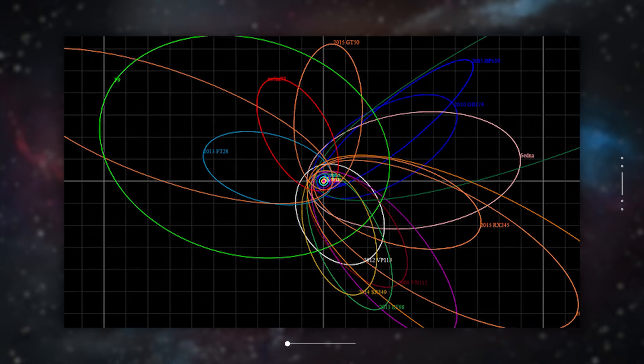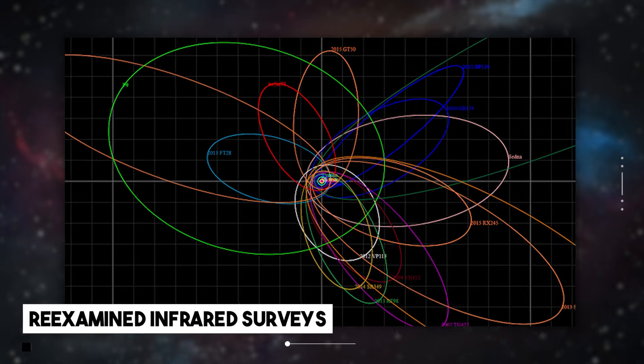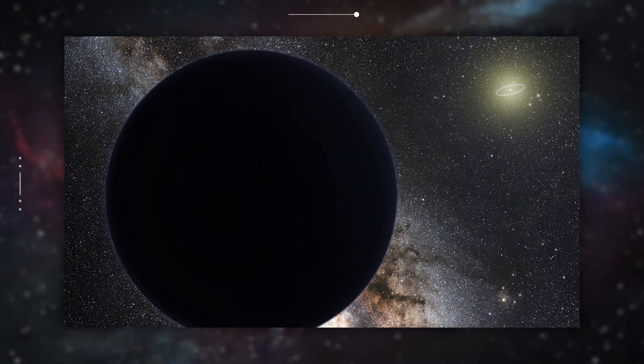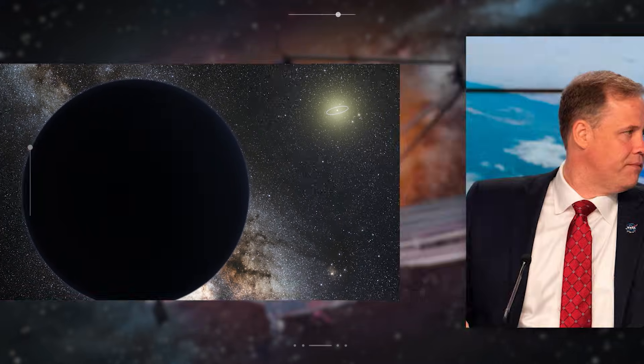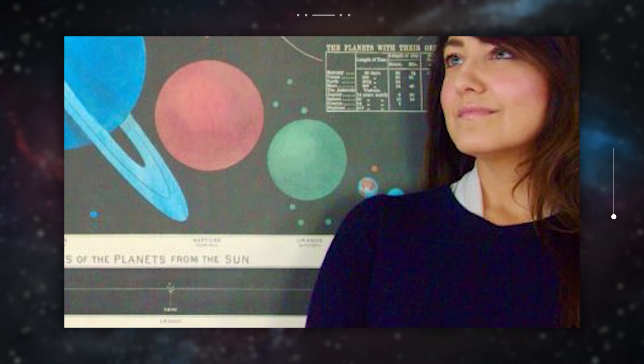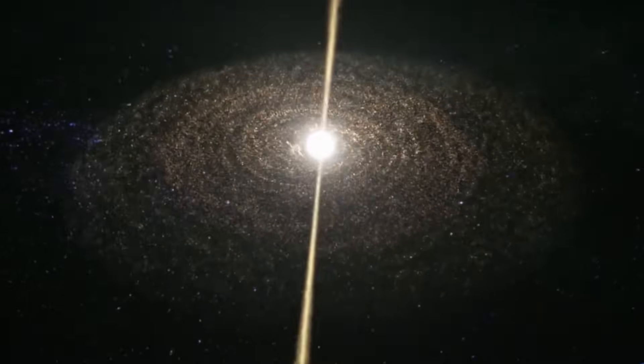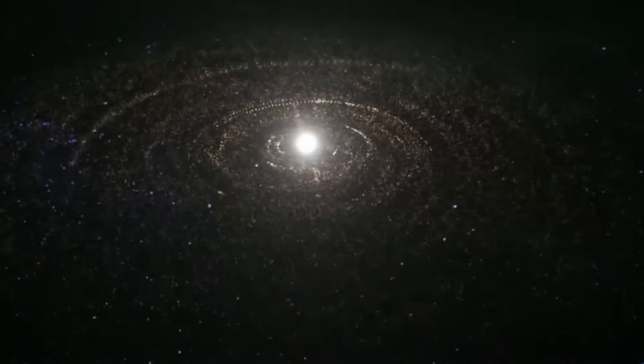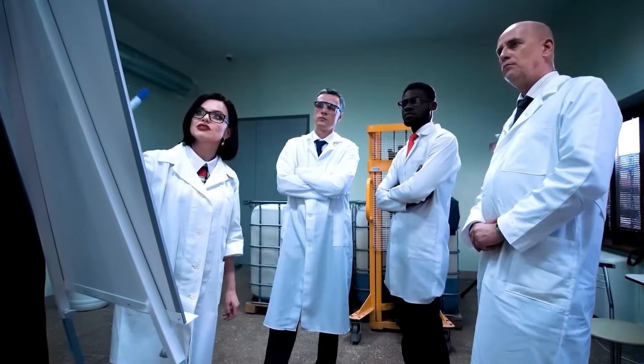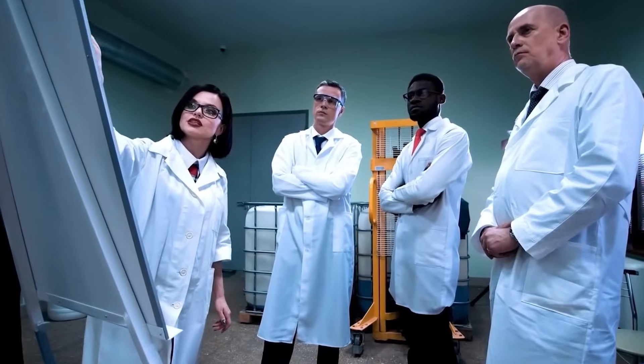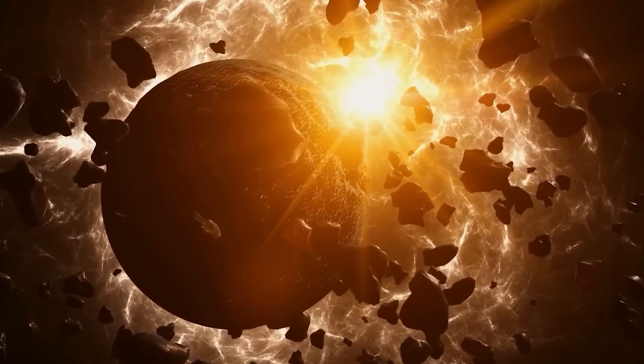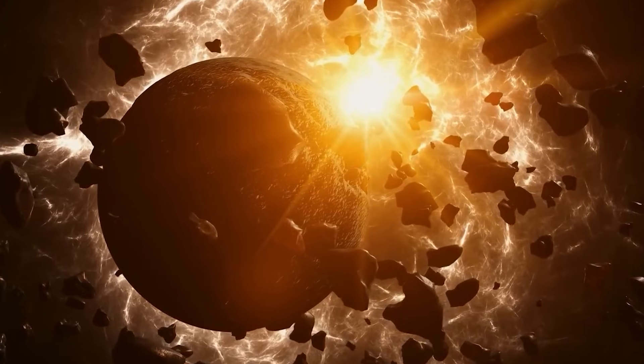NASA held its ground. Their reasoning was simple. A planet must be seen, not just predicted. It must be tracked across the sky, and its orbit confirmed through repeated observation. The evidence so far, they said, was compelling, but incomplete. That standard remains. And it's why, even after the Taiwan team's findings in 2025, NASA still hasn't changed its position. Their silence isn't necessarily rejection. It's procedure. But to many astronomers, the case for Planet 9 is getting stronger.